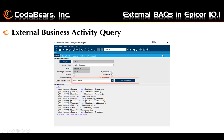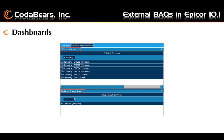Now you can finally get started using external business activity queries. You open the external business activity query menu item, which is almost exactly the same as the regular BAQ screen. The addition is the area to select the external data source from the drop-down, and you can also test the connection before getting started. You can then choose tables, columns, sort order, calculated fields, group by, sub queries, and so on, just as you would in regular business activity queries. Once created, you can put them on a dashboard using the same process as other dashboards.